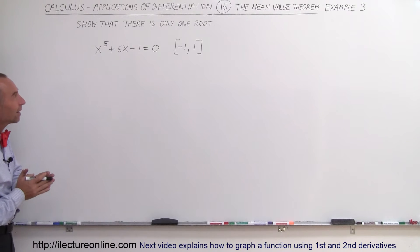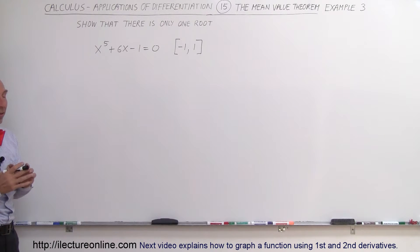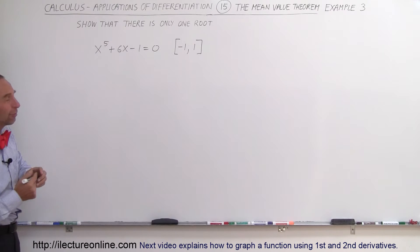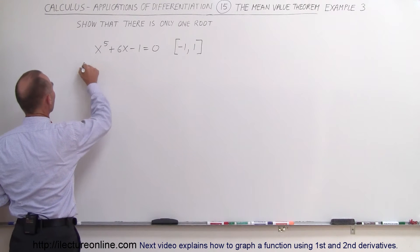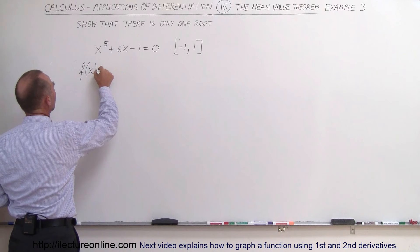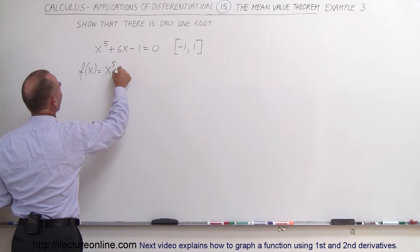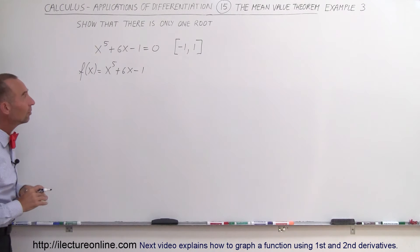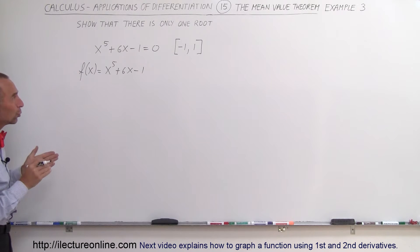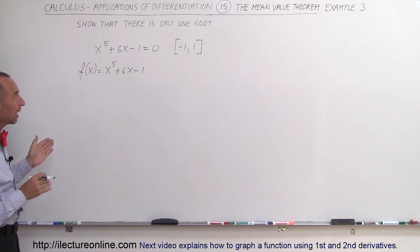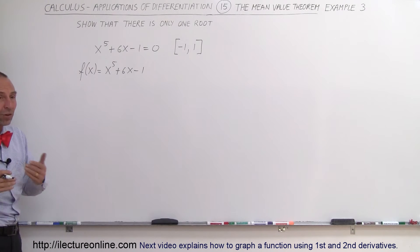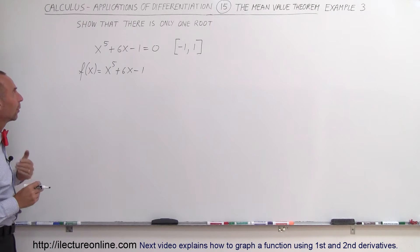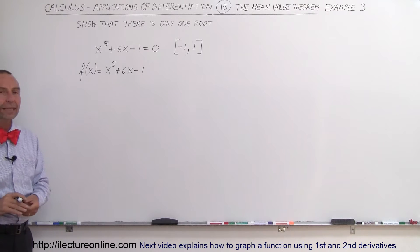Welcome to iLectra Online. We're given the function f(x) = x⁵ + 6x - 1, and what they're saying is that it only has one root between x = -1 and x = 1, which means it only crosses the x-axis once over that interval, and we're supposed to show that that's indeed the case.